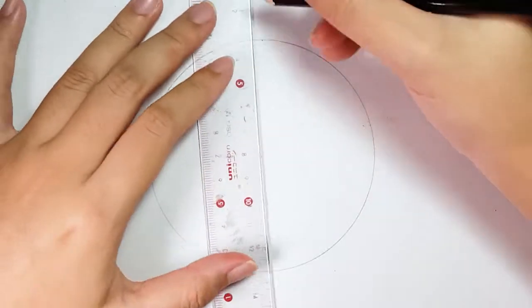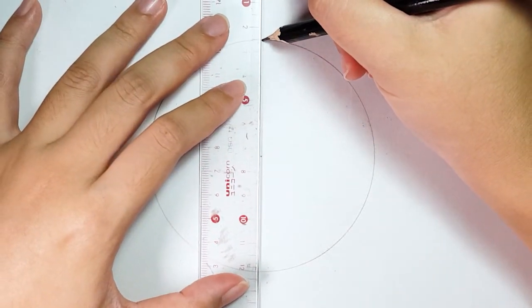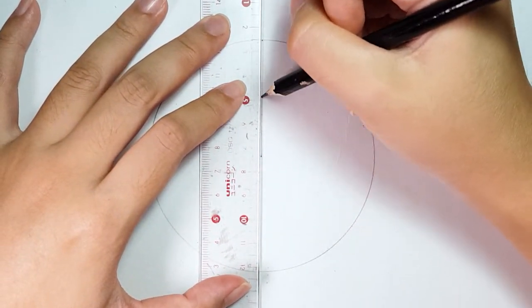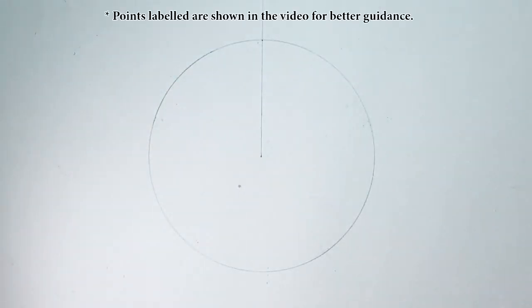Then, draw a radius line with your ruler from center point to circumference of circle. I label these points as point O and A.